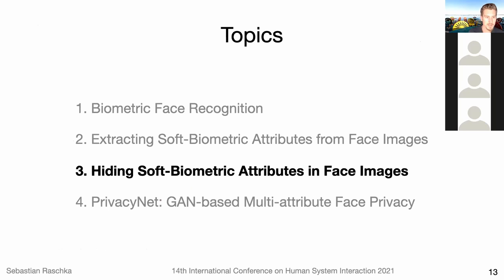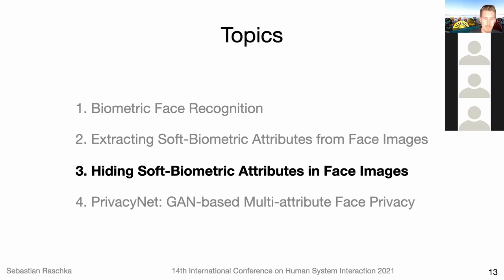I've talked about face recognition and extracting soft biometric attributes — how easy it is. Now I'm getting to the more important and interesting part: hiding the soft biometric attributes, so that someone cannot train systems to extract information about people who didn't give consent to this extraction.